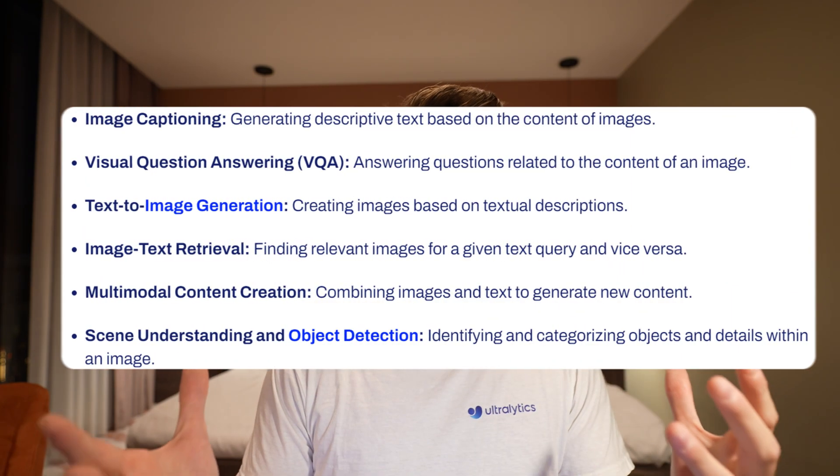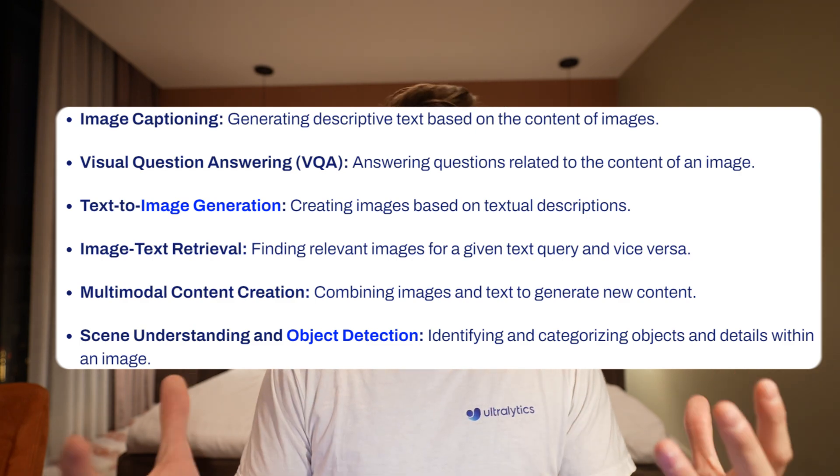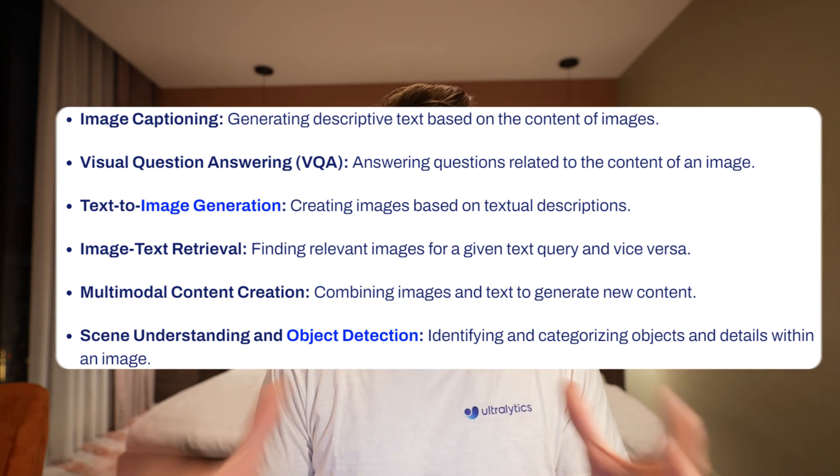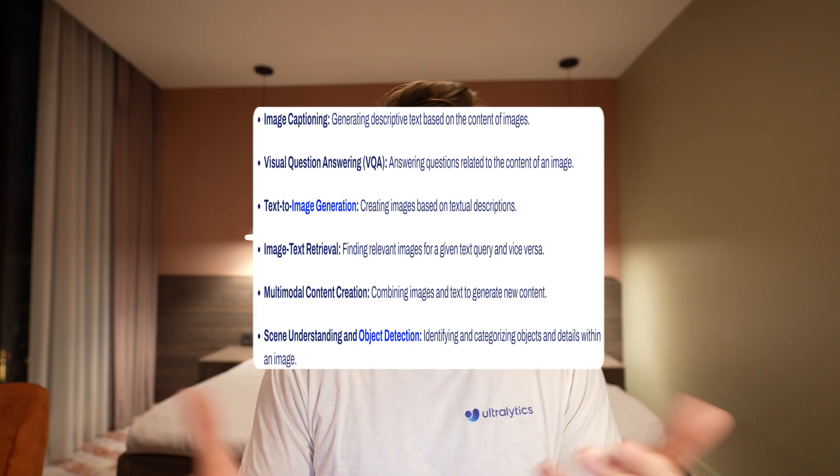We also have text-to-image generation — generative AI models where you provide a prompt and generate images, even videos and 3D models. These multi-modality and content creation capabilities of vision language models work in the same way as NLP large language models, but with images instead.